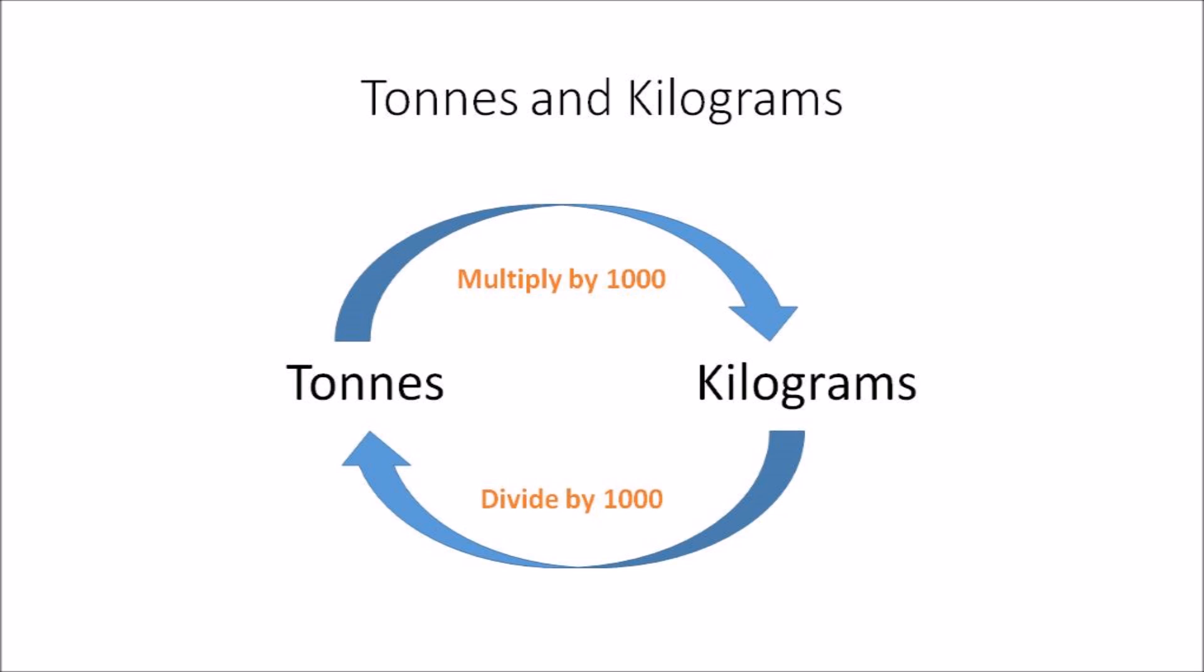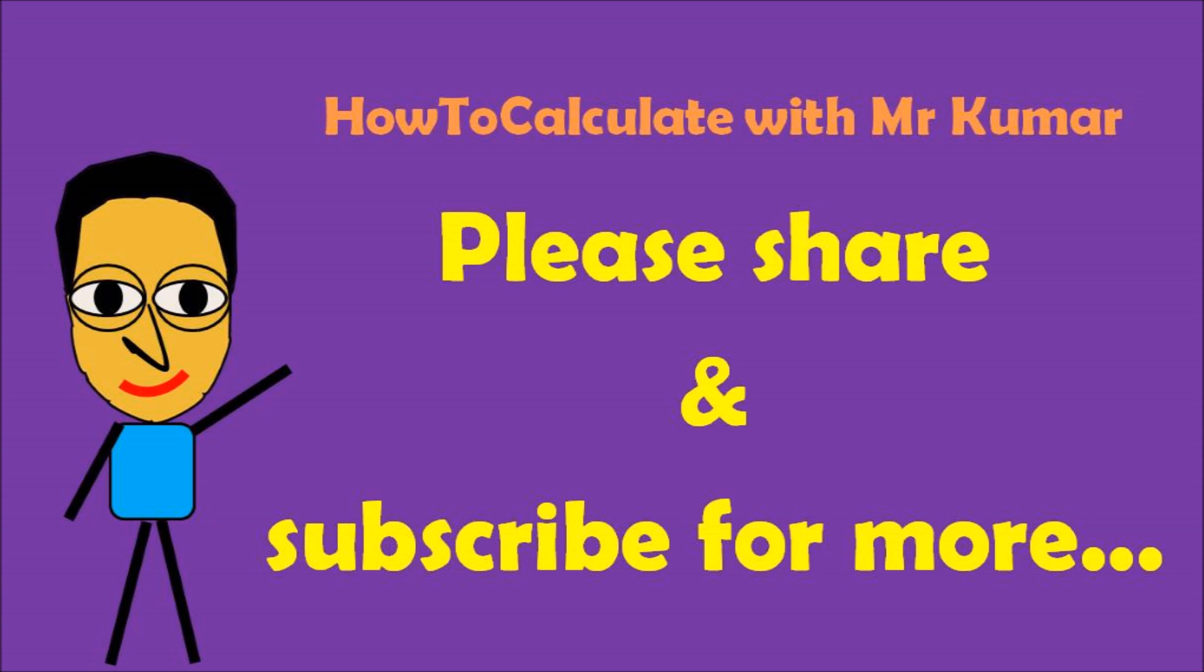So that's how easy it is to convert between tons and kilograms. From tons to kilograms, you multiply by 1000, and from kilograms to tons, you divide the amount by 1000.